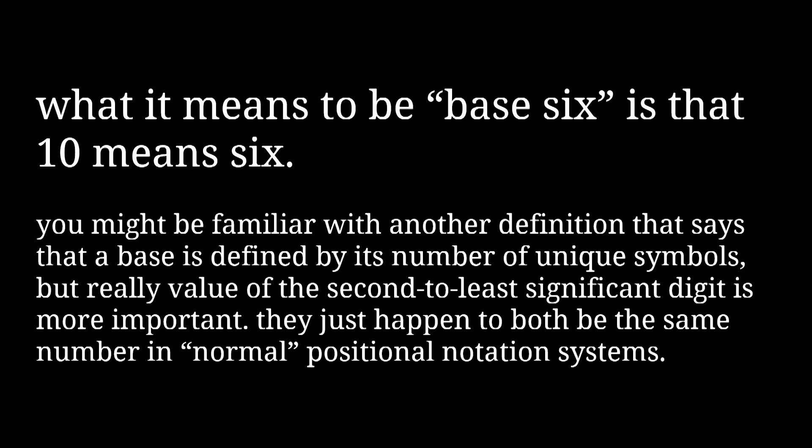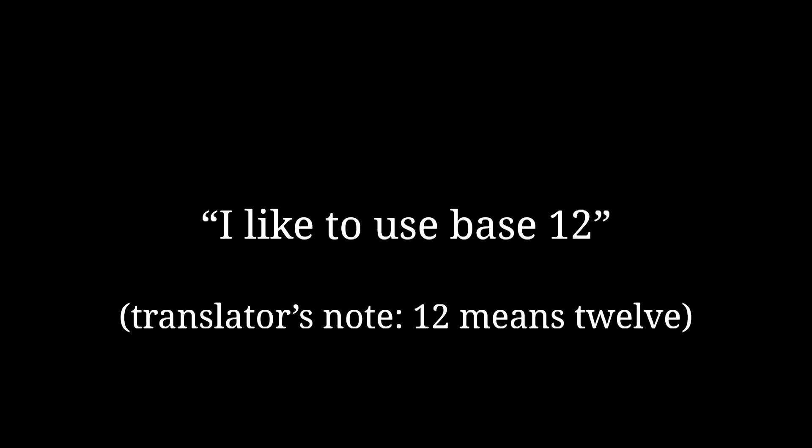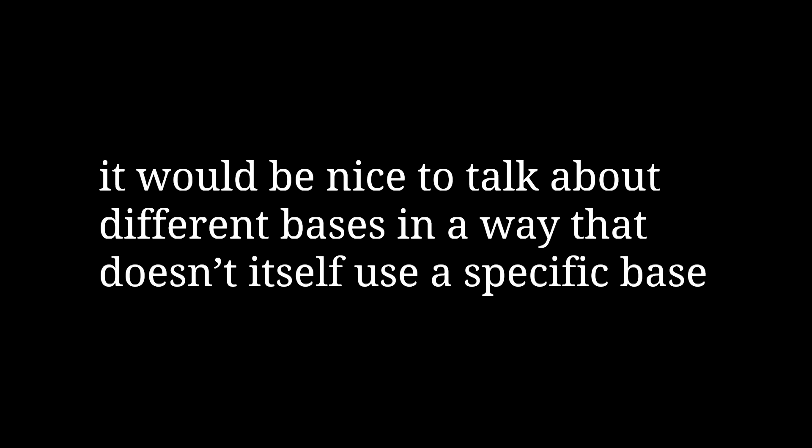What it means to be base six is that one zero means six. When you're talking about different numbering systems, the fact that every base is base one zero makes this way of referring to bases extremely ambiguous. You need to specify what base you're using to talk about a given base, but since that base is also base one zero, you need to specify what base you're using to talk about that base too. You could write out the English name of the number in full, or have everyone agree that base 10 is the default — but that's not ideal, especially when discussing alternatives to base 10. What you'd like is a way of talking about bases that is itself base neutral.